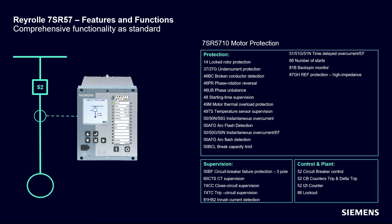Function 14 locked rotor protection uses definite time over-current elements to monitor motor stalled conditions. The operation of these elements can be controlled from motor stopped or running conditions. Function 48 allows the motor startup time to be monitored; an output is raised if the start time exceeds the setting. Function 66 monitors motor starting and provides settings to control both the number of times a motor can be started within a specified time period and the minimum time between starts.